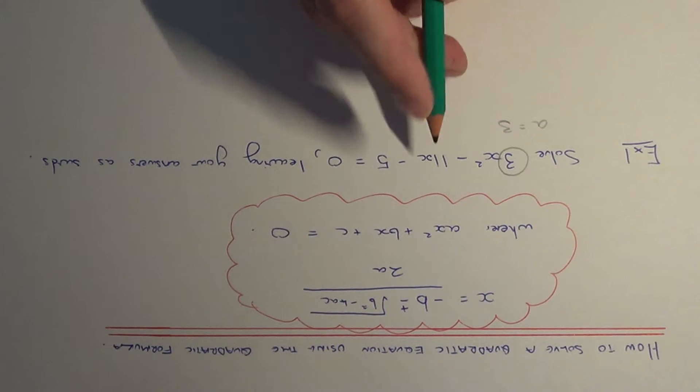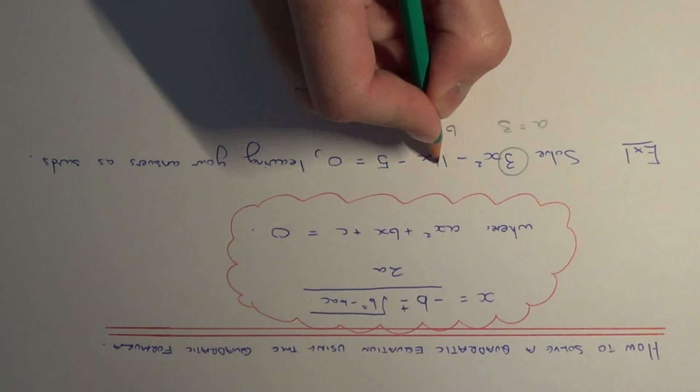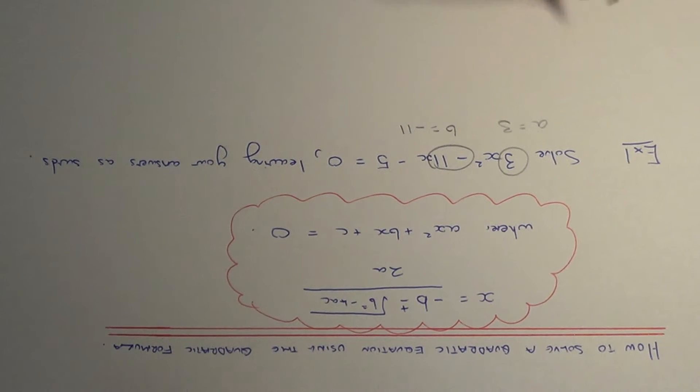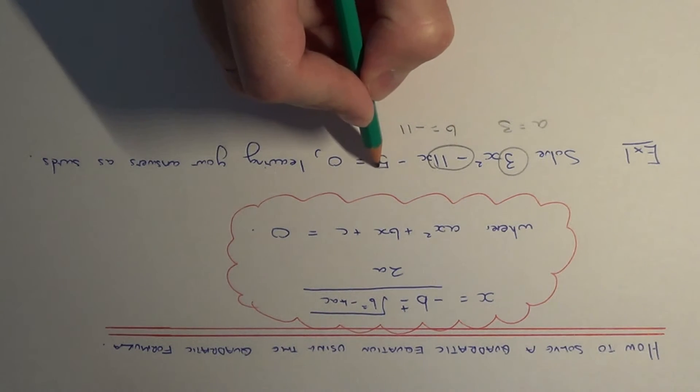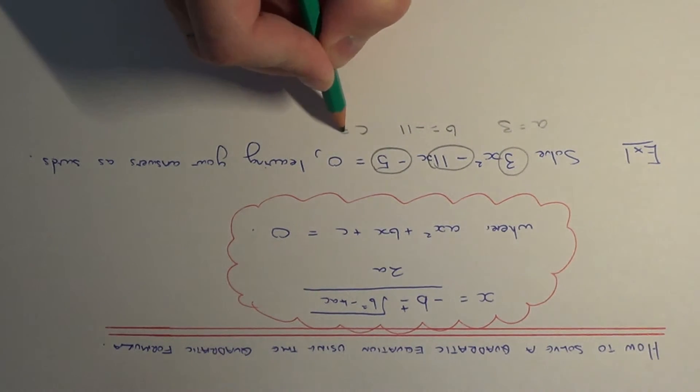b is the number before x, which is minus 11. Be careful with the negative. And c is the number at the end, which is minus 5.